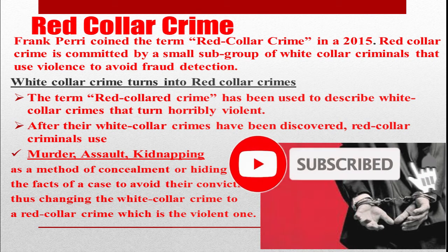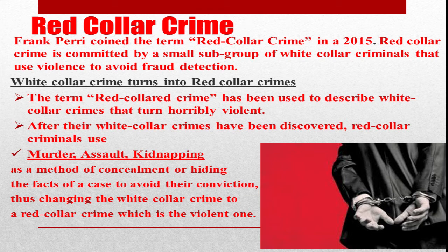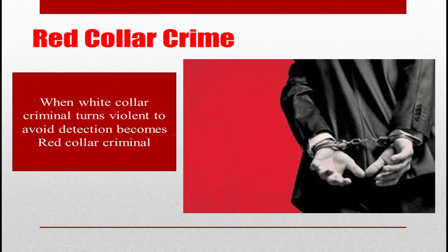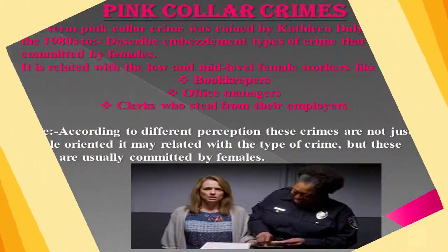After their white-collar crimes have been discovered, red-collar criminals use murder, assault, and kidnapping as methods of concealment — hiding the facts of a case to avoid conviction — thus changing the white-collar crime to a red-collar crime, which is the violent one. In short, when a white-collar criminal turns violent to avoid detection, he or she becomes a red-collar criminal.